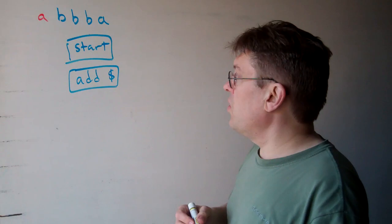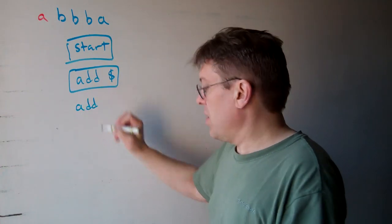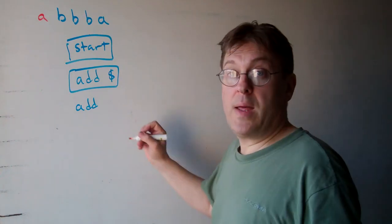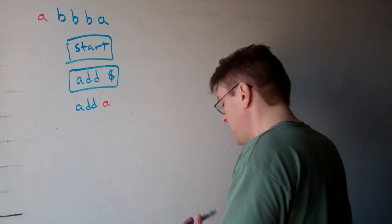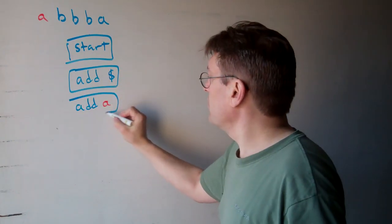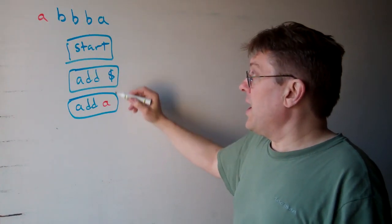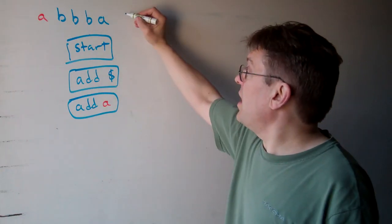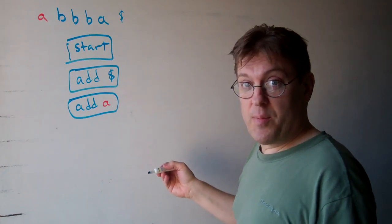Then after we add that dollar sign, we're going to add the character that we want to append at the beginning. So in this case, it's this A here. Now once we've added that A, all we've got to do is loop through the rest of the string until we get to the dollar sign, and we've got our appended string.